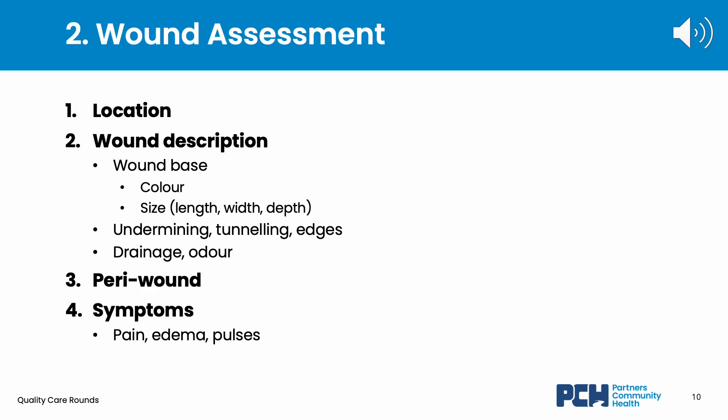So now that we know some of the common types of wounds, how do we assess a wound? For that, I will introduce a four-step process: location of the wound, describe the wound, describe the area around the wound, and state any symptoms that the resident experiences associated with the wound. Wound assessment should occur with every dressing change. For step 1, identify the location using appropriate anatomical landmarks — for example, the coccyx, which is the lower back area.